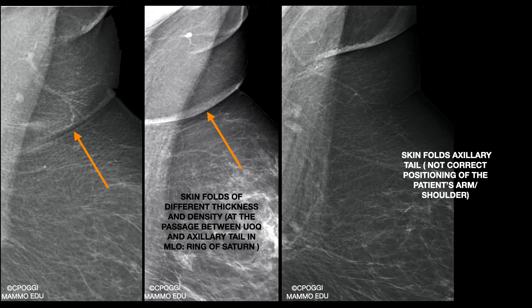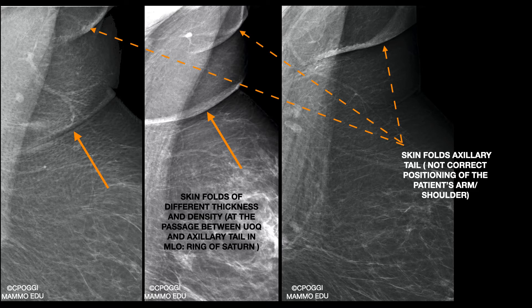A typical ring of certain artifacts is found exactly at the passage between upper attenuation and axillary tail; it is due to a not effective stretching out of the tissue in this area, and is not always resolvable. On the contrary, these ones are due to improper positioning of the patient's arm and shoulder.